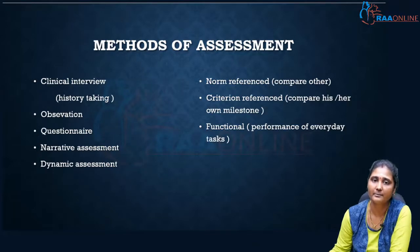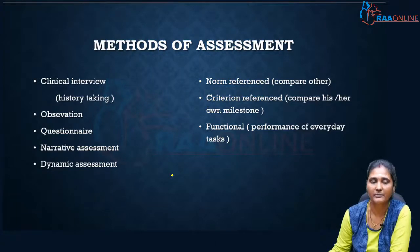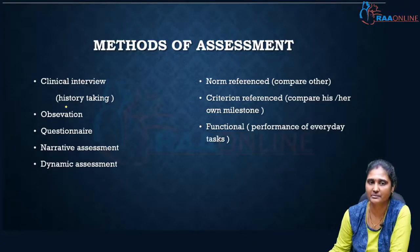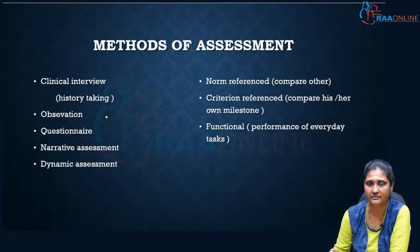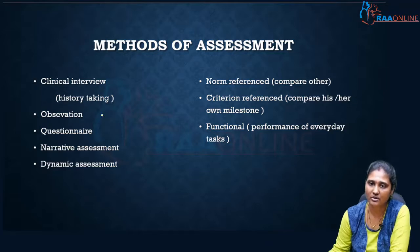Coming to the methods of assessment — how we will proceed, how we will assess the baby. By various methods you can do the assessment. By clinical interview, which is majorly history taking, starting from the antenatal history, you have to take a complete detailed history of the child. By clinical interview we will be able to know whether there is a developmental delay or developmental regression. Regression means some milestones would have been achieved, but later on in life those achieved milestones are also lost.